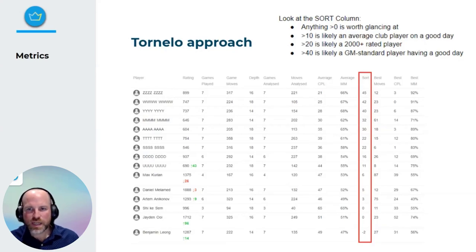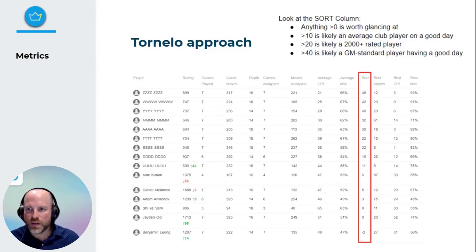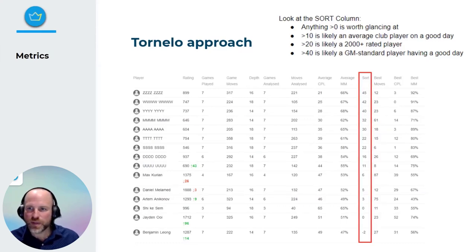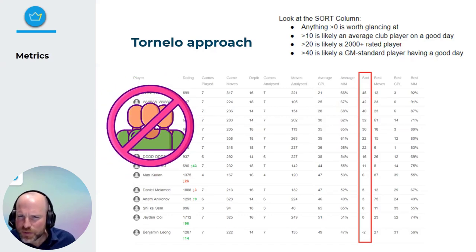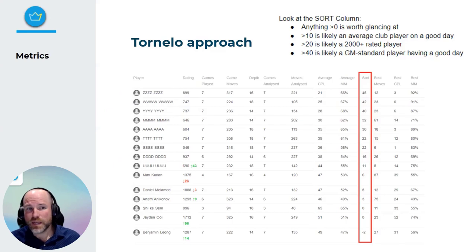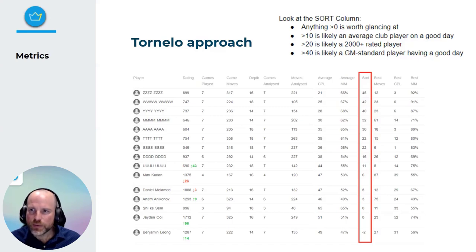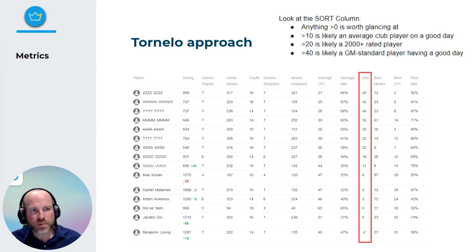In this example, all the players with names blanked out were disqualified from the event. The majority actually came forward, admitted to getting assistance, and apologized. We let them come back and play in the very next tournament — because it's not about punishing people, it's about changing their behavior. When they showed remorse, came forward to apologize, and pledged to play fairly in the future, we've had many of those players play in future tournaments completely fairly.